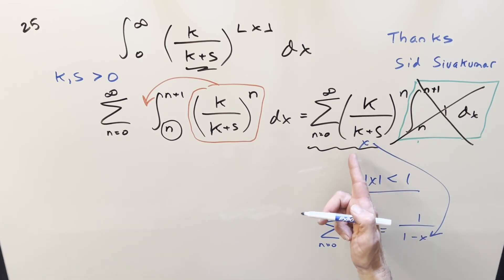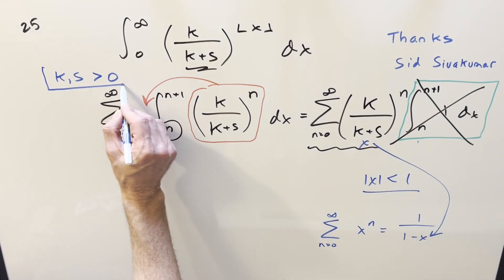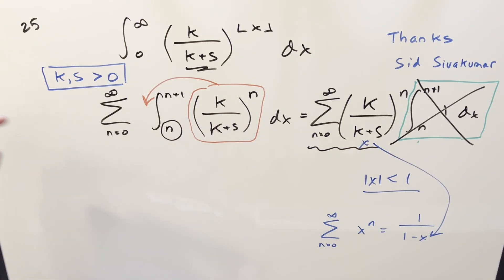The question is now, is k over k plus s going to be less than 1? I think the key part is that we're given that k and s are greater than 0. And so with this condition, we don't have to worry about any negative numbers. We don't have to worry about dividing by 0 or anything. And also we can say k is going to be less than k plus s if these are both positive numbers. And then therefore we can say that k over k plus s, this is going to be less than 1. Also it's going to be greater than 0. But the important thing is when we use the geometric series formula, this condition is met. And so we don't have any worries. We can just go right to our formula here.